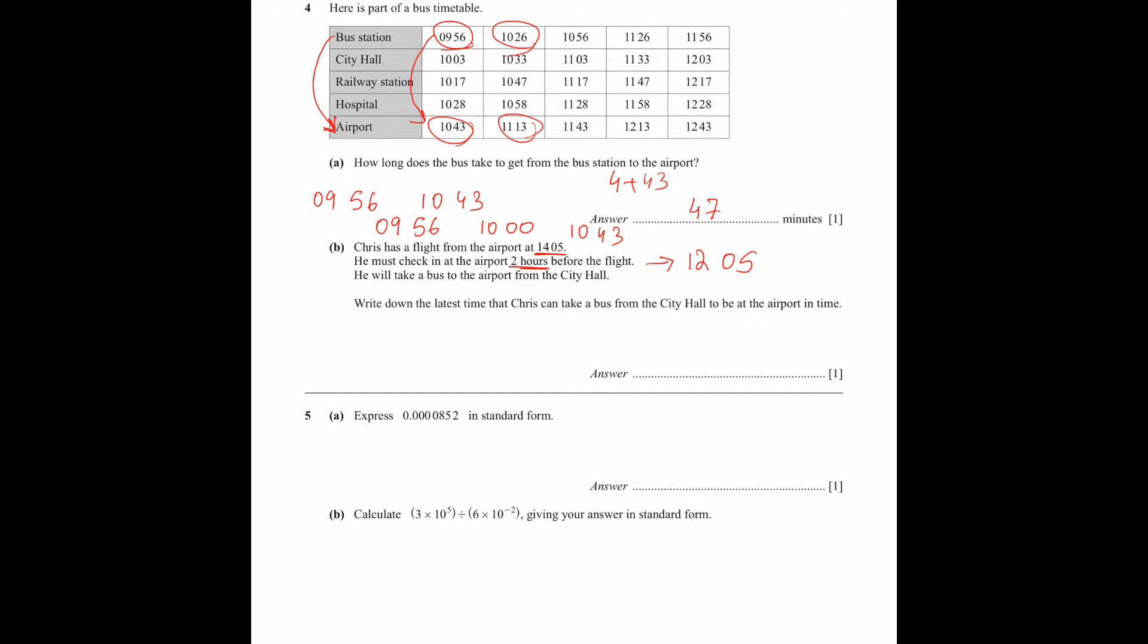What is your answer? He will take a bus to the airport from the city hall. Chris has to reach the airport from the city hall. He has to reach the airport at 12:05. So the question is, what is the latest time he should leave from the city hall in order to make it before 12:05?